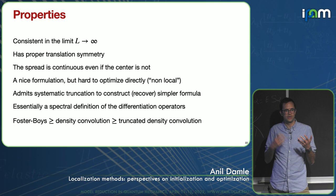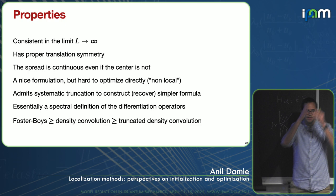Moreover, we get rigorous bounds: the density convolution representation of spread is less than or equal to the Foster-Boys criteria. When we truncate it, that's also a lower bound. So we actually have lower bounds on the spread you'd get if you thought of the function over minus infinity to infinity — whereas the Marzari-Vanderbilt formulation doesn't have such bounds; it can overestimate or underestimate. Here we always underestimate the spread if you thought of the function in the infinite domain.